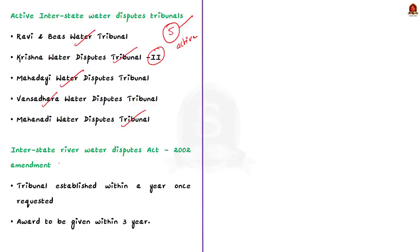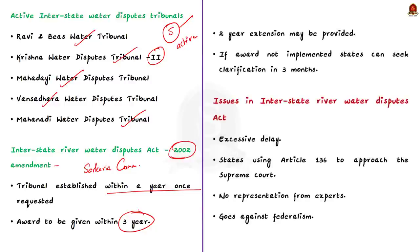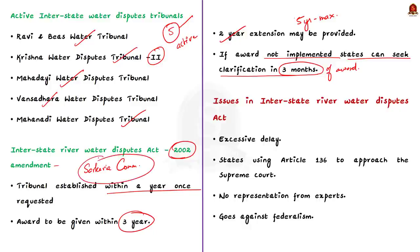Now we will see the amendment of the Interstate River Water Disputes Act. In 2002, the Act was amended to include recommendations of the Sarkaria Commission. First, when there is a request to create a tribunal, it must be established within one year. Second, the tribunal must give the award within three years; in some cases two more years can be given, so the maximum period is five years. Third, if the tribunal award is not effectively implemented, the concerned state parties may seek clarification within three months of the award.